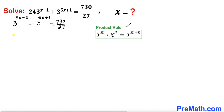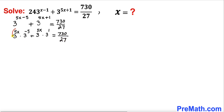The first term could be written as 3 power 5x times 3 power negative 5, and the second term could be written as 3 power 5x times 3 power 1, equals to 730 divided by 27. We can see that 3 power 5x is common in both terms, so we can factor it out.